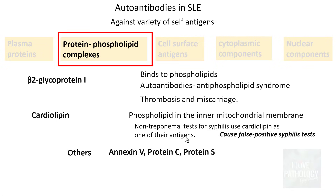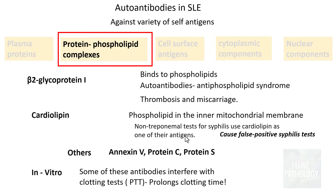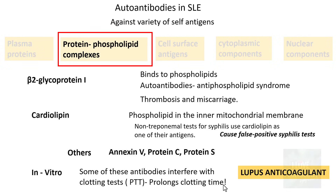Other protein-phospholipid complexes include annexin, protein C, and protein S. Some of these antibodies in vitro interfere with partial thromboplastin time (PTT) testing by prolonging clotting time — this is why these antibodies are also referred to as lupus anticoagulant, which is paradoxical because in vivo they cause thrombosis, not anticoagulation.